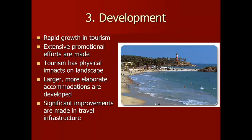The third stage is called development. In this stage, we start to see rapid growth in the tourist industry. Expensive promotional efforts are made, and tourism has physical impacts on the landscape — we can see development of beachfronts for tourists, deforestation to create more room for cities to expand, and changes to beaches to prevent erosion. We also see larger, more elaborate accommodations being developed, going from a few small hotels to many large hotels, with multinational corporations moving in.